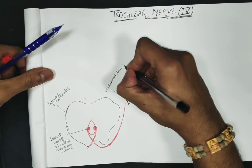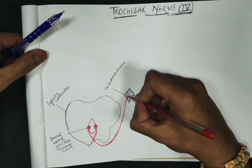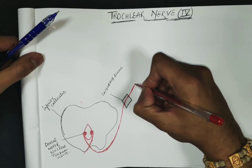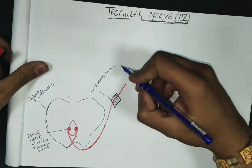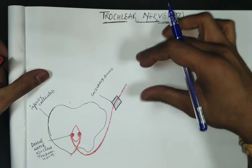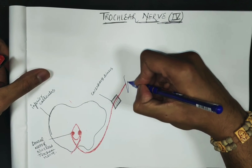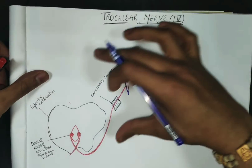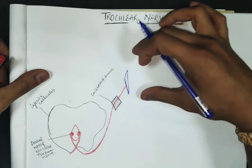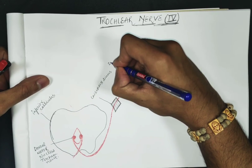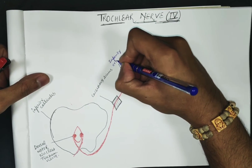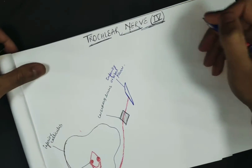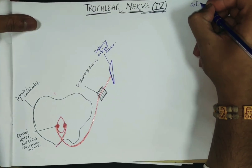After exiting the cavernous sinus, the nerve travels toward the eye orbit. It exits the skull cavity through the superior orbital fissure, the same fissure through which the oculomotor nerve also exits. This is your superior orbital fissure.